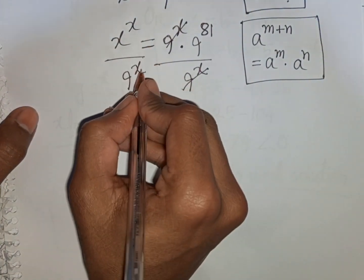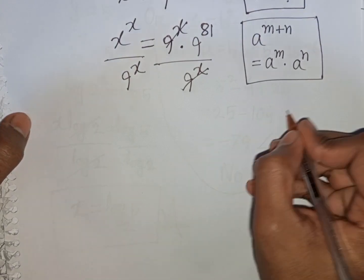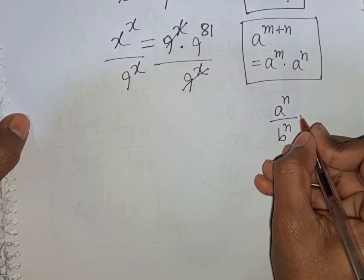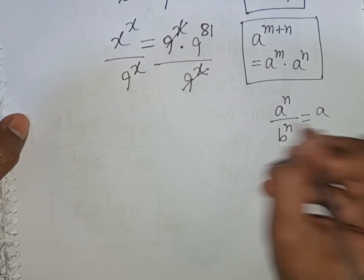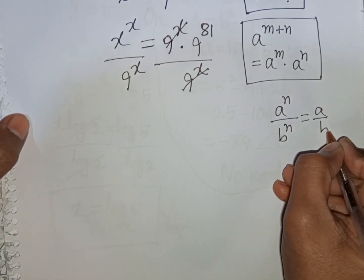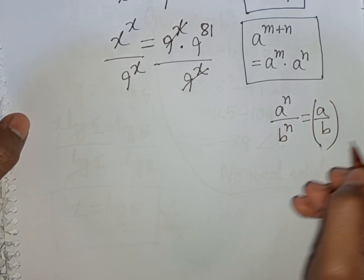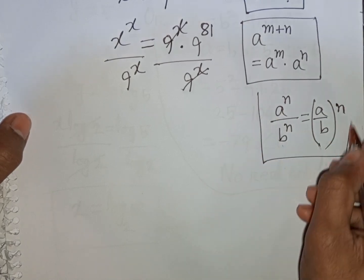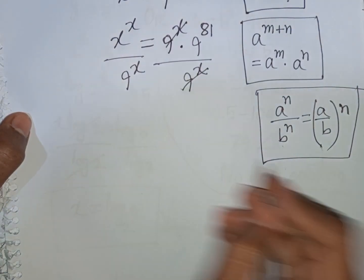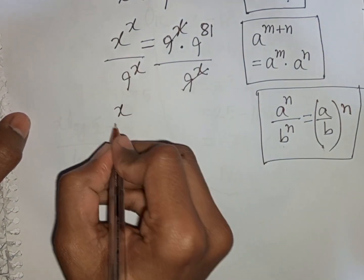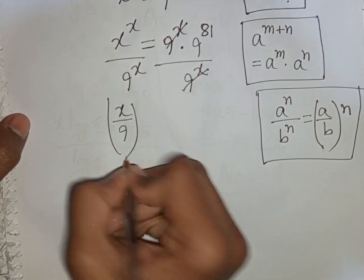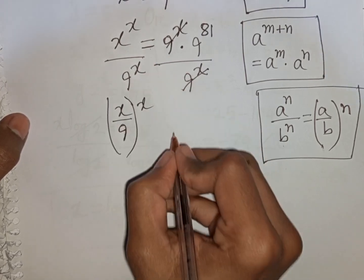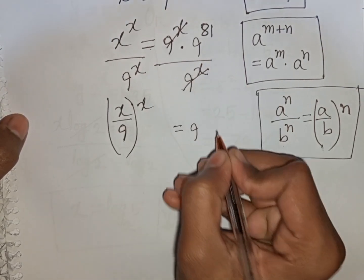Now we see x and 9 have the same power x but are different bases. Remember the formula: a^n times b^n is equal to (a times b)^n. So according to this formula, we can write (x/9)^x is equal to 9^81.